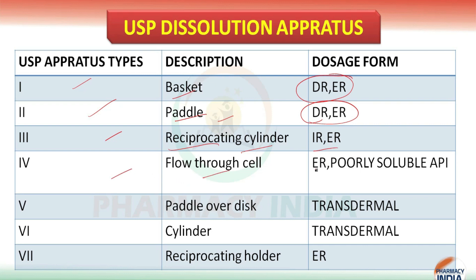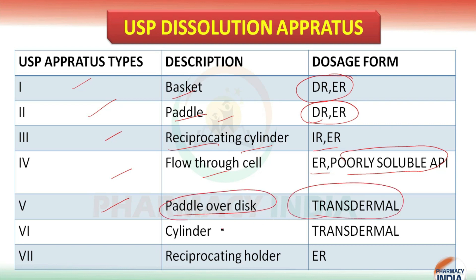The Flow-Through Cell (USP Apparatus 4) is used for extended release and poorly soluble active pharmaceutical ingredients. The fifth one is the Paddle Over Disc, which is for transdermal dosage forms. The sixth one is the Cylinder, also used for transdermal dosage forms.